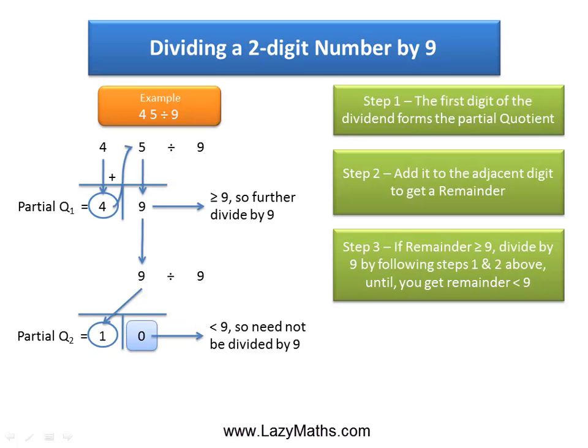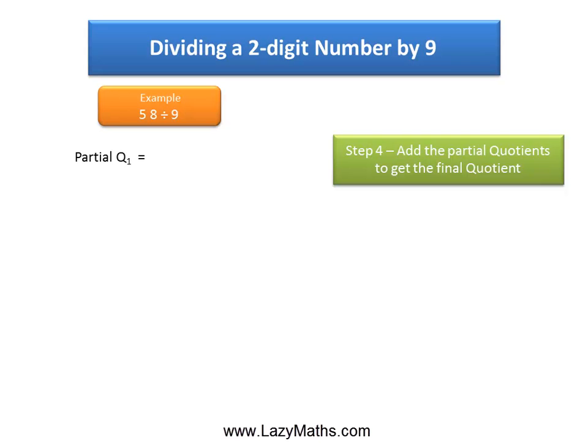Since 0 is less than 9, we call this the final remainder. We got two quotient values, q1 as 4 and q2 as 1. So we simply add q1 and q2 and we get 4 plus 1 is 5 and this becomes the final quotient.